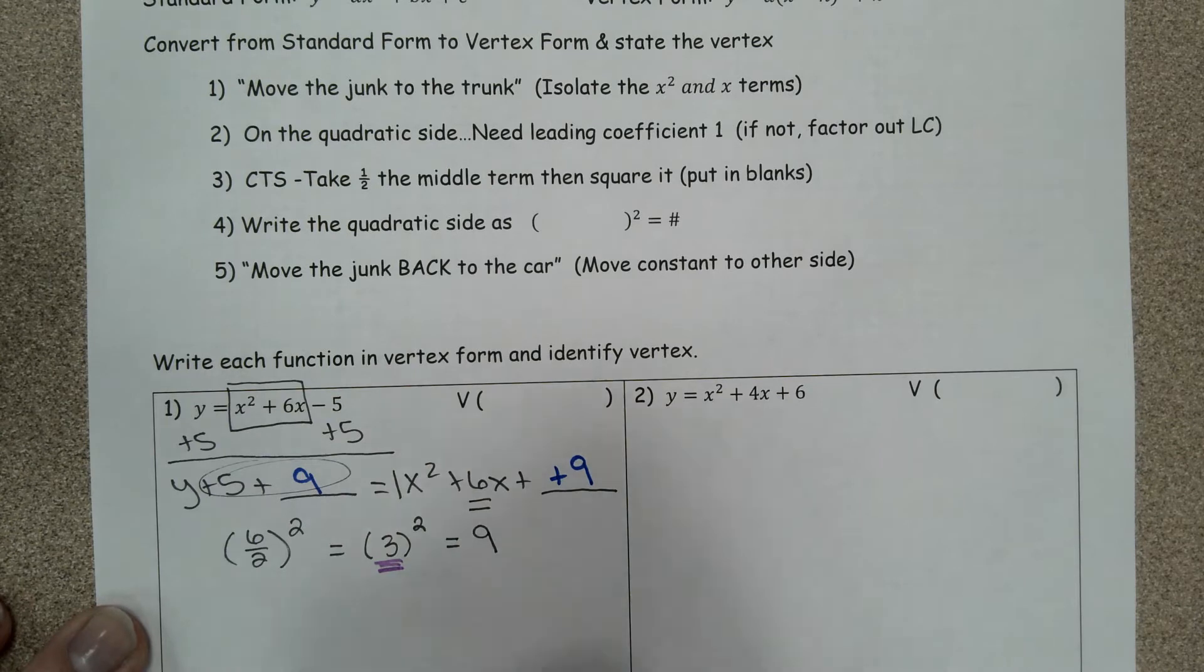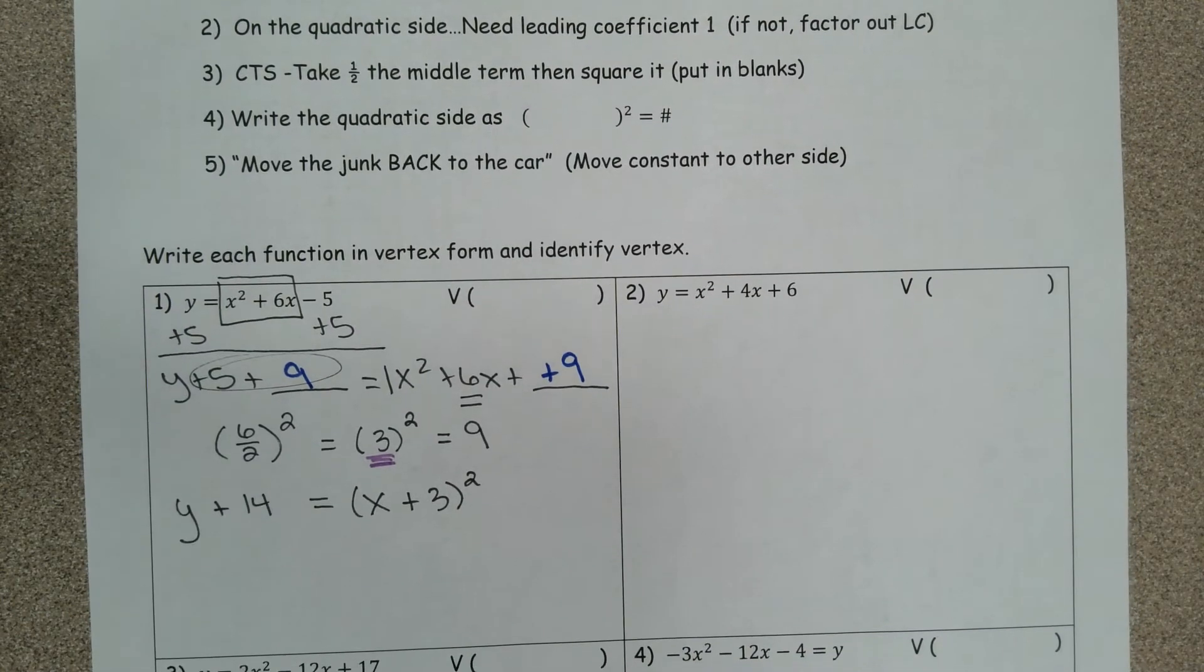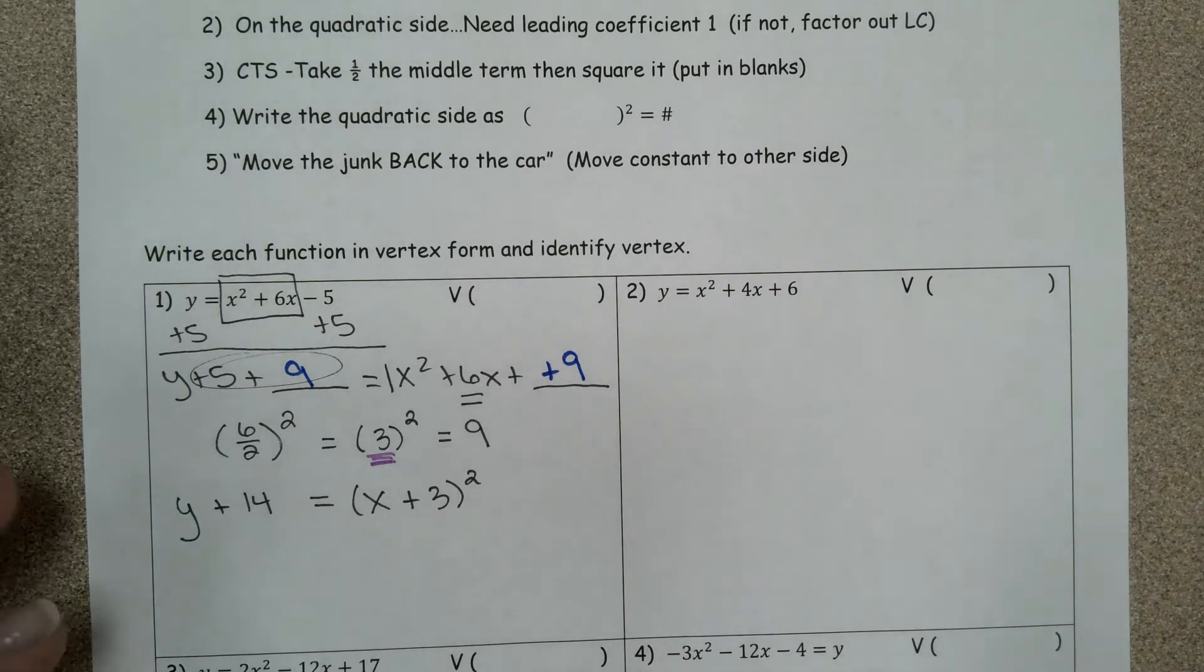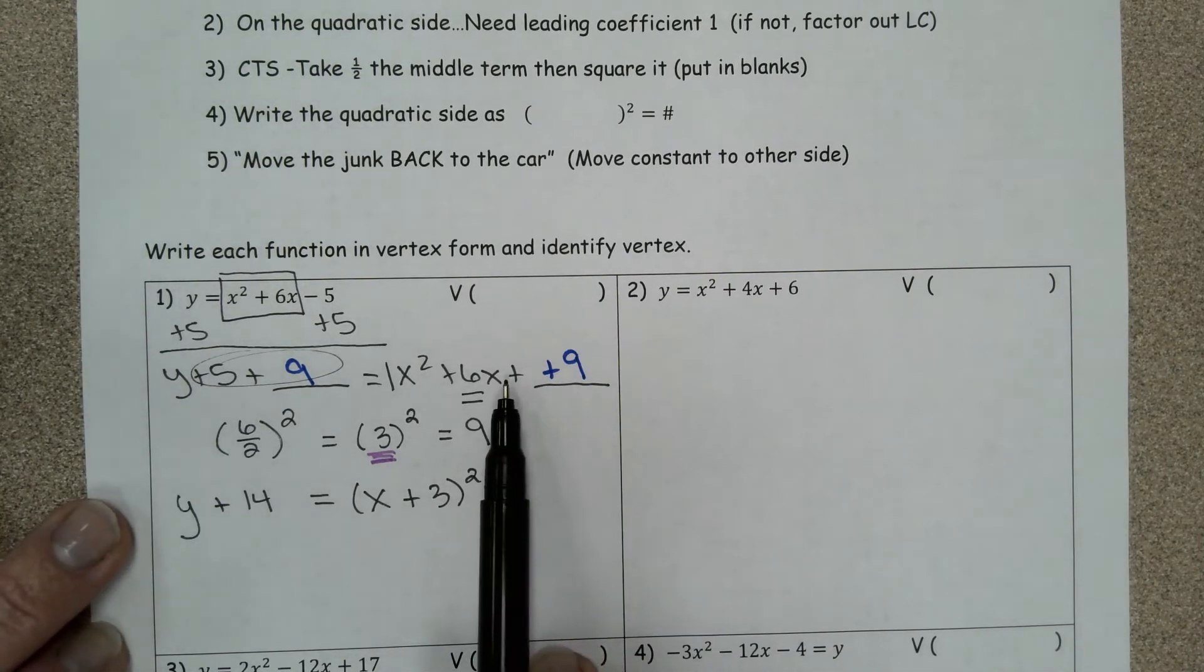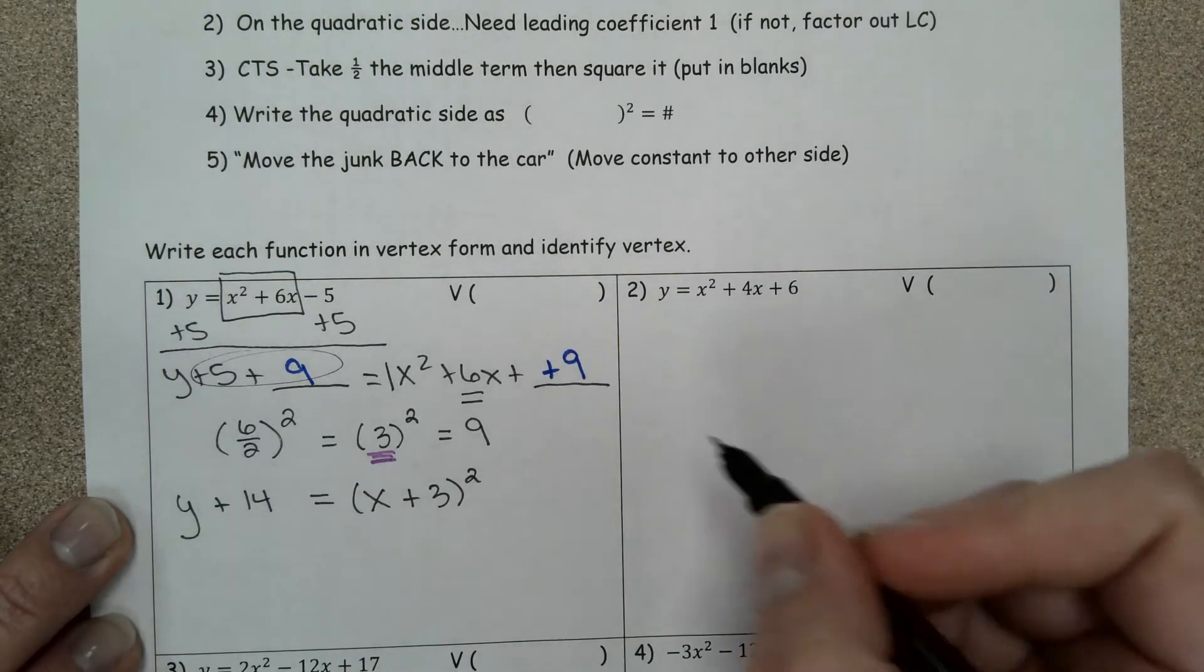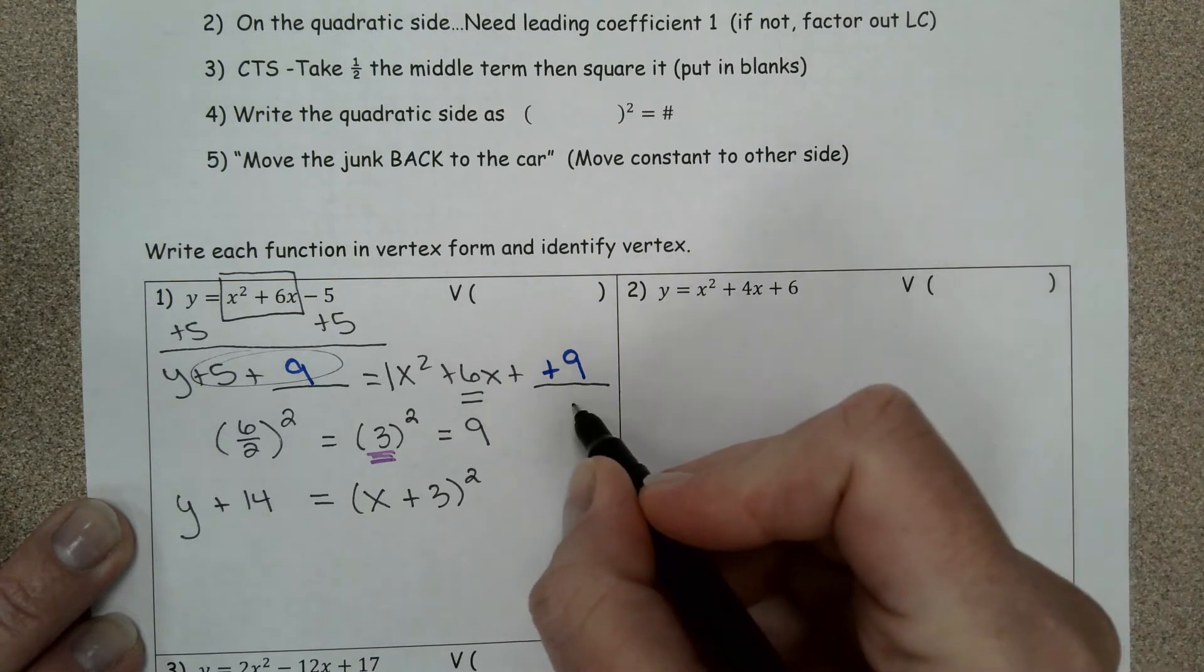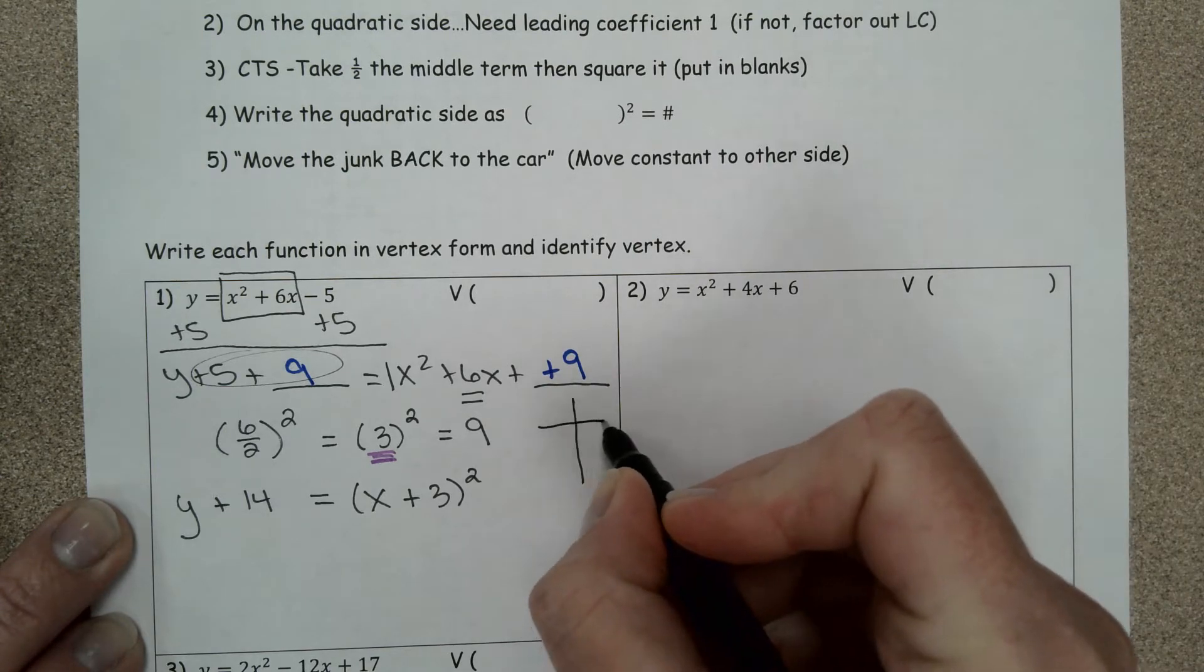This left side I'm going to go ahead and combine like terms, so I get a 14 equals x plus 3 squared. Now you might be asking yourself how did you just jump from this down to this? I factored it.